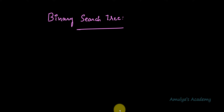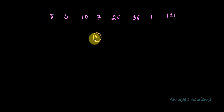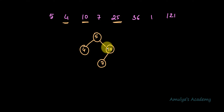Next, let's see how to construct a binary search tree from a list of values. I'll take a few random values. First, take the first value — 5 — and create a root node. Next value is 4: 4 is less than 5, so it goes to the left. Next is 10: 10 is greater than 5, so it goes to the right. Next is 7: 7 is greater than 5 but less than 10, so it goes to the left of 10. Next is 25: 25 is greater than 5, go right; greater than 10, so it goes to the right of 10.